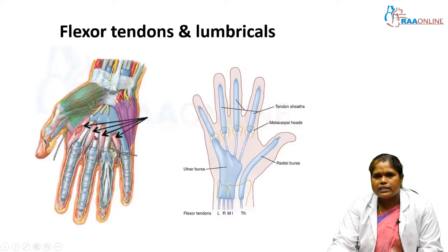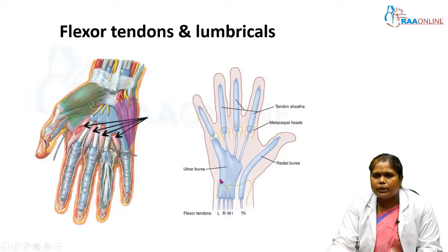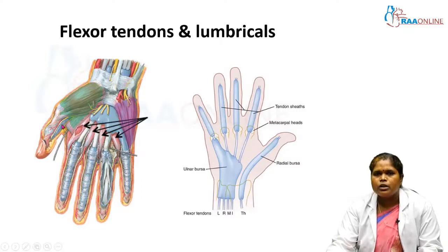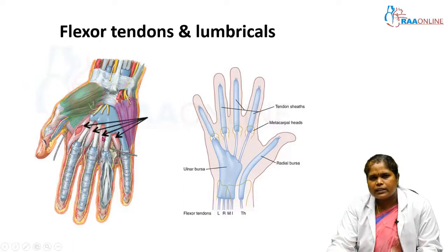Below the neurovascular bundle we see the long flexor tendons. The long flexor tendons for the medial four fingers are covered by a common synovial sheath known as the ulnar bursa. The synovial sheath covering the flexor pollicis longus tendon to the thumb is known as the radial bursa. Below the neurovascular bundle we also see the slender worm-like lumbrical muscles.